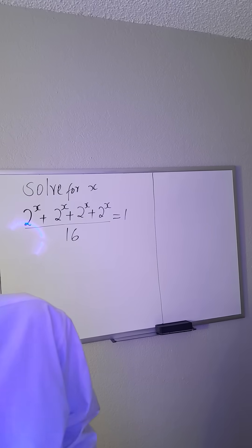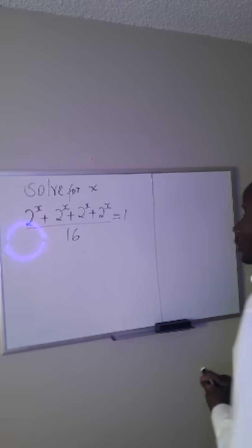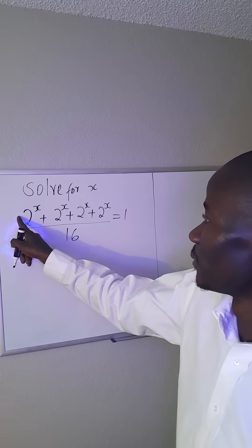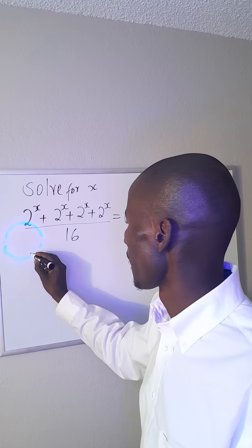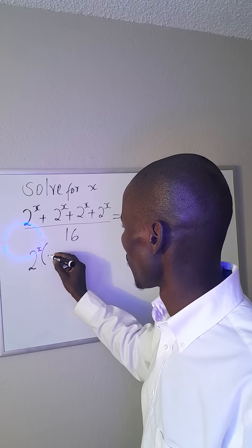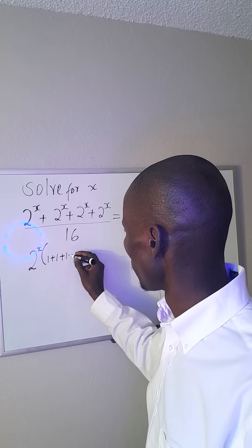Look at this exponential question. We are solving for x. The first thing I do is factorize the numerator: I have 2^x into bracket (1 + 1 + 1 + 1), everything out of 16 is equal to 1.